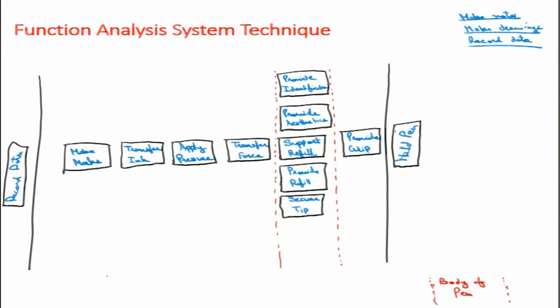The basic functions along the critical path from left to right are: record data → make marks → transfer ink → apply pressure → transfer force → support refill → provide grip → get a pen. Now let us look at each function and identify whether we need some support function for them. 'Make marks' — just depositing or transferring ink can help us. 'Transfer ink' — we need to apply pressure. 'Apply pressure' — we need to transfer force. To transfer force, the refill also has to contain ink.